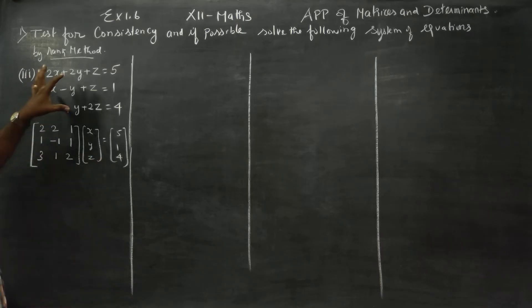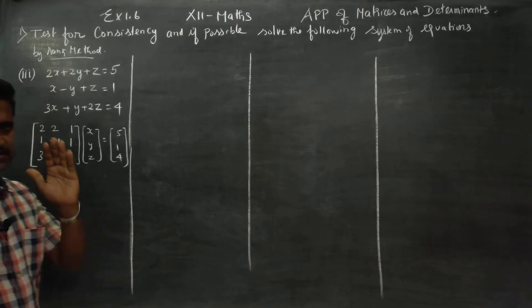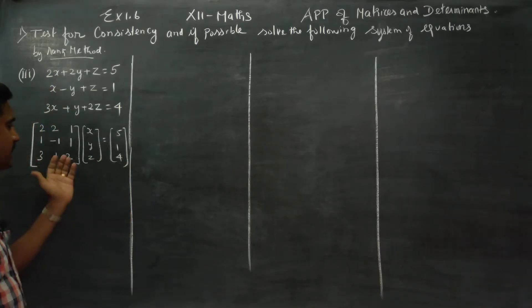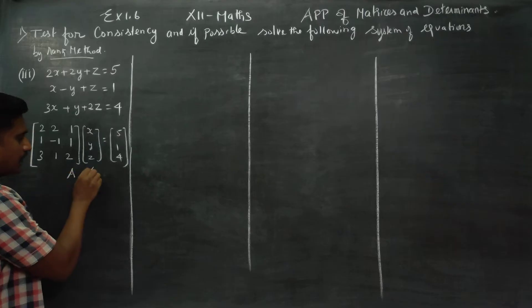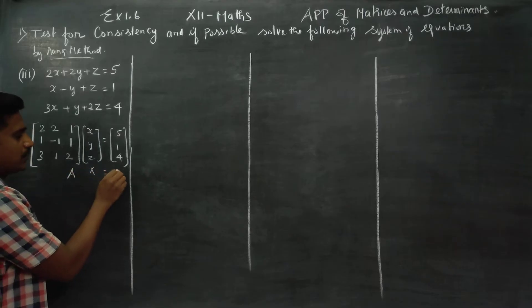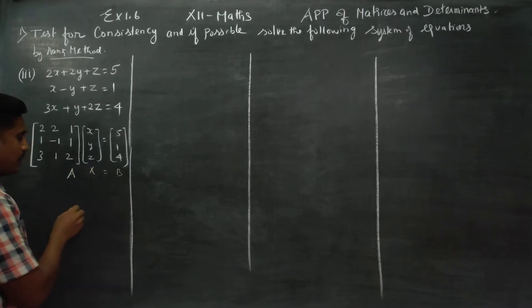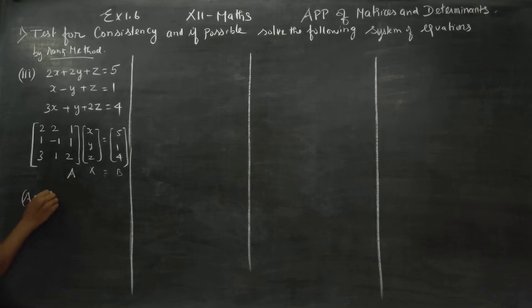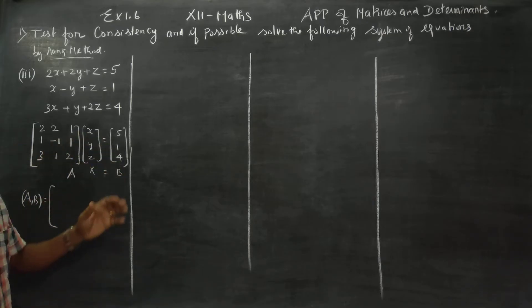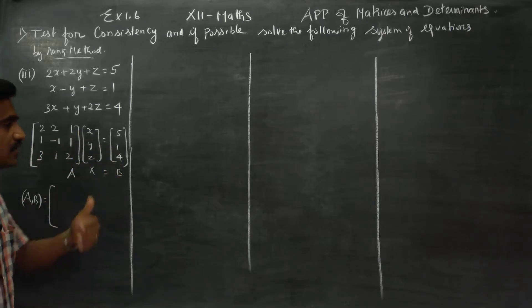Converting the equation into matrix style, we name it A, x, b. First you have to write the augmented matrix. The augmented matrix combines the A matrix and the b matrix together.